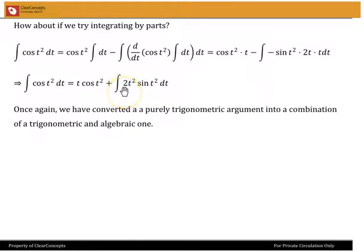This turns out to be t cos t squared plus the integral of 2t squared sin t squared dt. And once again, if we look at it, we have changed a purely trigonometric argument cos t squared into a combination of a trigonometric and algebraic one. Here, 2t squared sin t squared dt. And there's no way now to proceed. So again, this would seem to be a wrong approach.